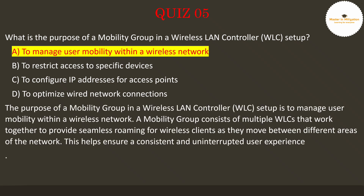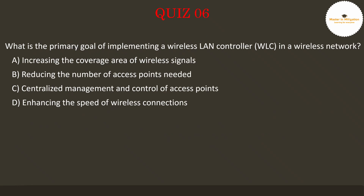The answer is: Manage user mobility within a wireless network. The purpose of a mobility group in a Wireless LAN Controller, WLC, setup is to manage user mobility within a wireless network. A mobility group consists of multiple WLCs that work together to provide seamless roaming for wireless clients as they move between different areas of the network, ensuring a consistent and uninterrupted user experience.